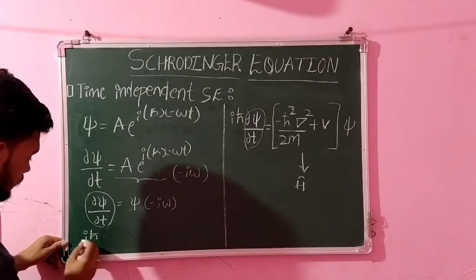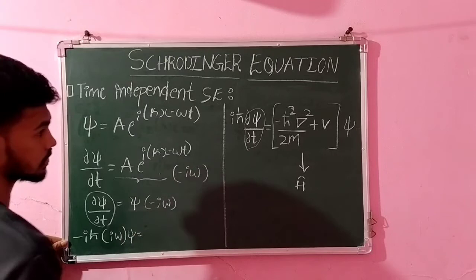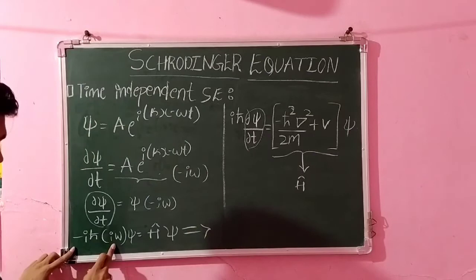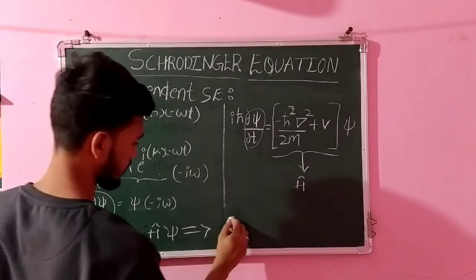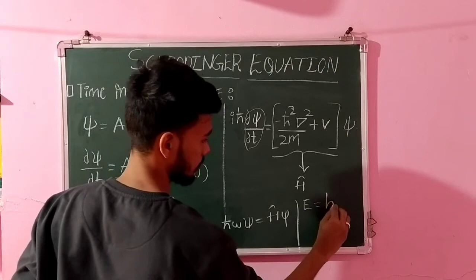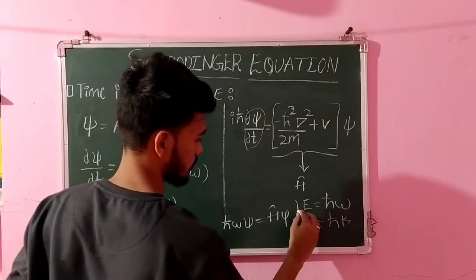-iω psi equals H cap of psi. So further I will calculate here. i times i, i squared value is -1. So -1 times -1, it will become plus. So we will get ℏω psi equals H cap psi. As we know that E equals ℏω and P equals ℏk. So substitute this one. ℏω is nothing but E.